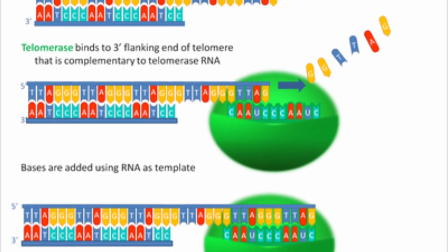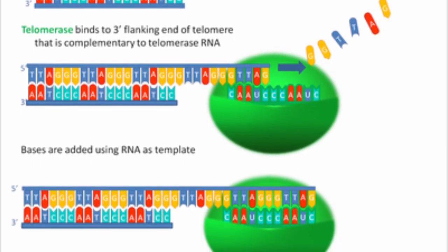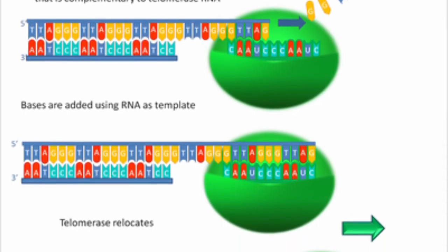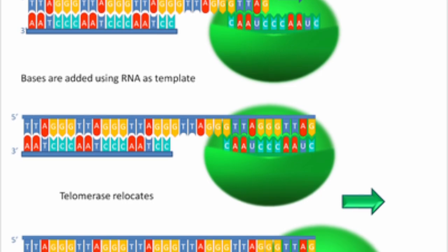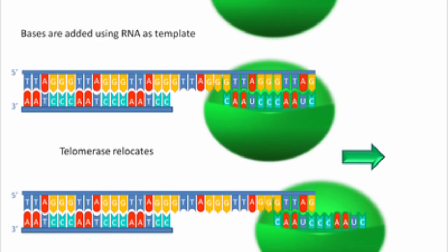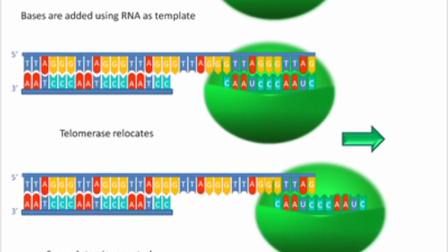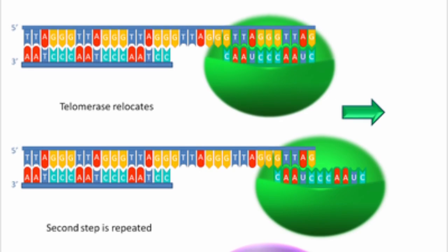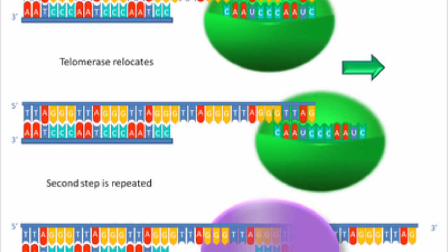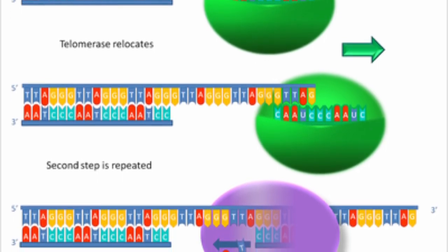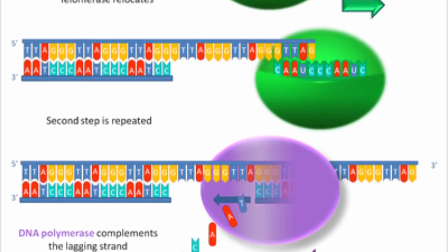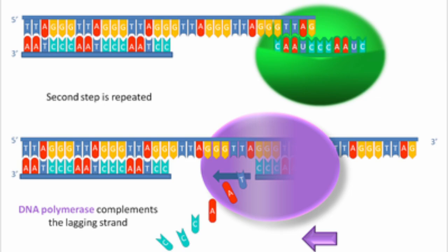Telomerase binds to the telomere ends, positioning the RNA template near the 3' overhanging end of the telomere. Using the RNA template as a guide, the TERT component synthesizes a complementary DNA strand onto the 3' overhang of the telomere. This extension effectively lengthens the telomere. After adding a telomeric repeat, telomerase translocates to a new position on the telomere and repeats the process, allowing the enzyme to continuously add multiple repeats and prevent shortening.